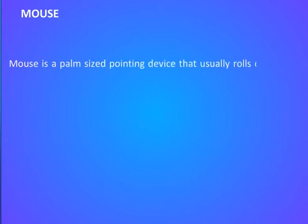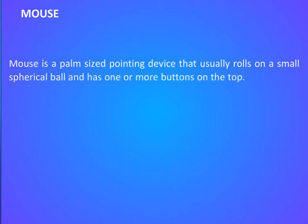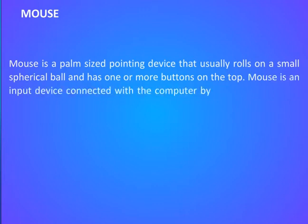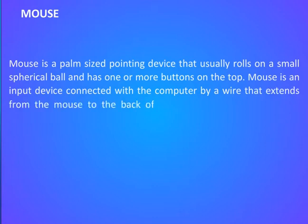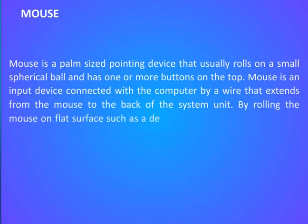The mouse is an input device connected to a computer by a wire that extends from the mouse to the back of the system unit. By rolling the mouse on a flat surface such as a desk or a mouse pad, an image on the screen called a pointer or mouse cursor moves on the screen.